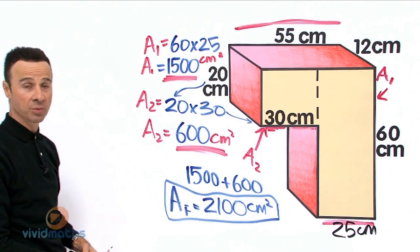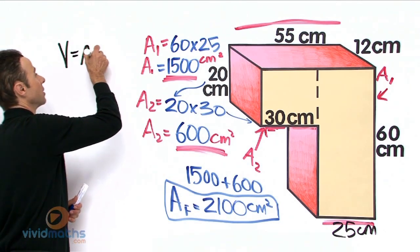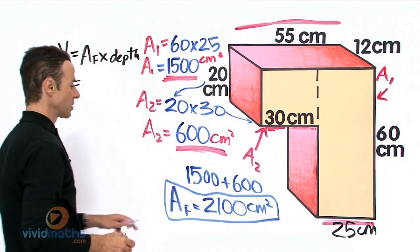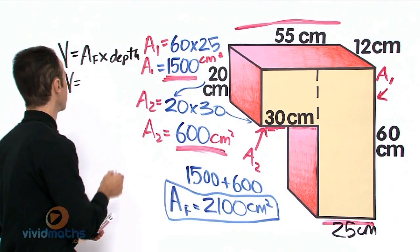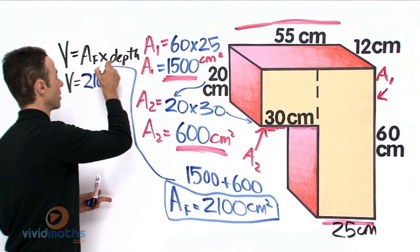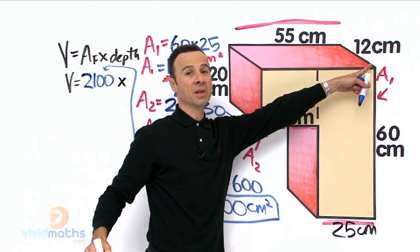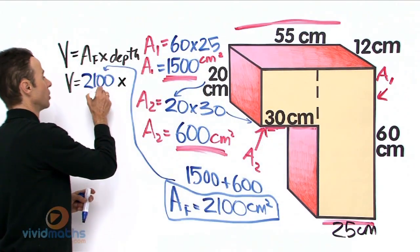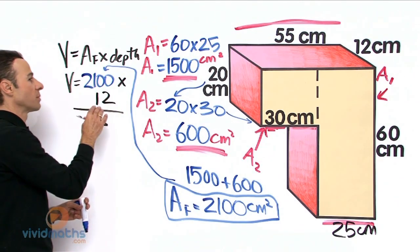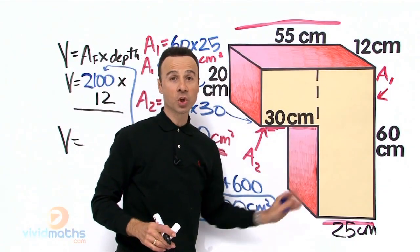So total volume of that whole shape equals area of the face times the depth. And that is going to be 2100, and that comes from here, there it is, 2100. And then we multiply times the depth, and the depth up there is 12 cm. You see that? So that is going to be times 12. So let us multiply them, that is the depth all the way across. 2100 times 12 gives us a grand total of the volume of all of this in cubic centimeters.